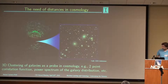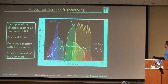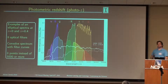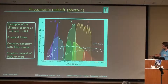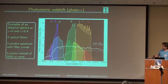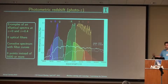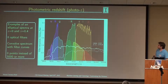Measuring distances to galaxies is the first problem we need to address. You can use the full spectrum — just the light of the galaxy going through a prism — so you have all the wavelengths and can see features from absorption lines of different chemical elements. The position of these lines can tell you the redshift with respect to the rest-frame spectrum, and then you can infer the velocity and therefore the distance to the galaxy.